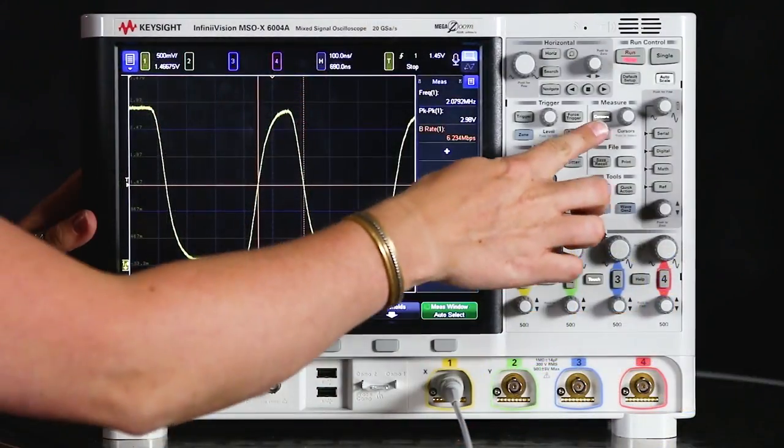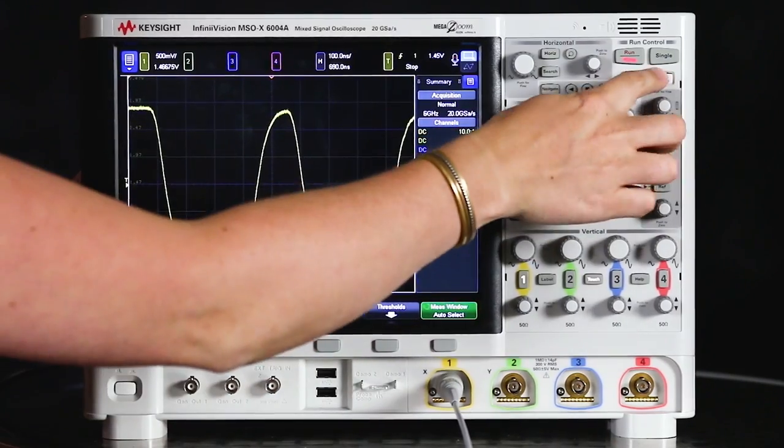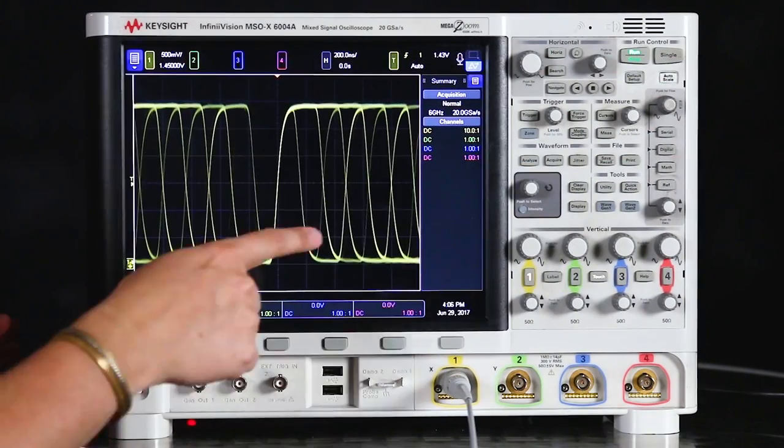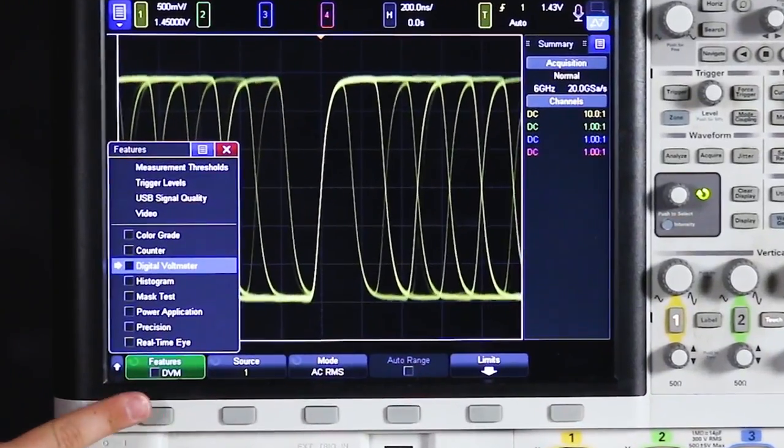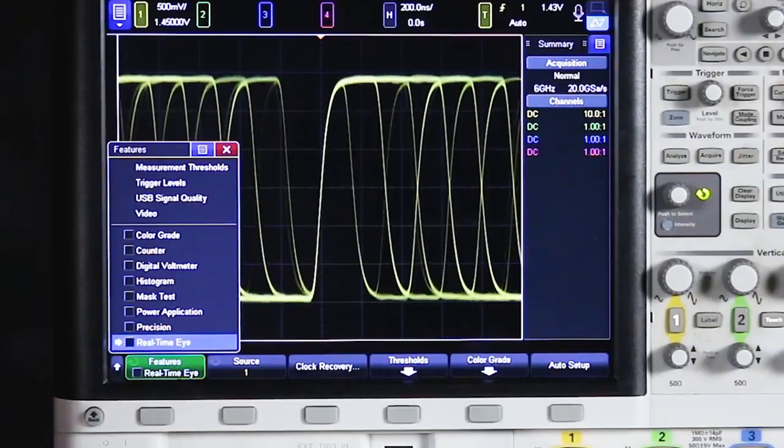So the first thing I want to do is turn off my measurements and press auto scale. And then we can go into the analyze menu. And in here we're going to go to features and select real-time eye. But we don't want to turn it on yet so we only want to select it once.